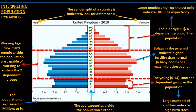Apart from a baby boom, a bulge in the 40–50 age range can also result from migration. When there is mass immigration — people entering the country — you see an increase at those age groups. This is typical of developed countries where people are trying to find a living.